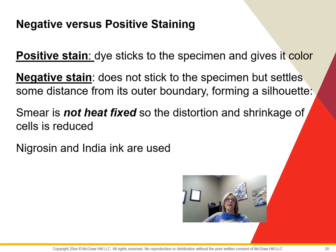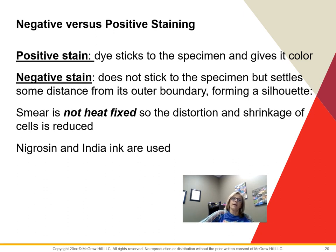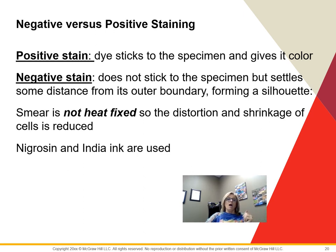Be careful not to confuse gram-positive and gram-negative with a negative stain. A positive stain sticks to the specimen, giving you a colored specimen on a clear or white background. A negative stain does not stick to the specimen but sticks to the background, giving you a dark background with clear cells — that is different from gram-negative. Negatively charged cells repel the negatively charged dye and remain unstained. The smear is not heat fixed because it will distort and shrink the cells. Nigrosin and India ink are negative stains used to look at things like capsules.